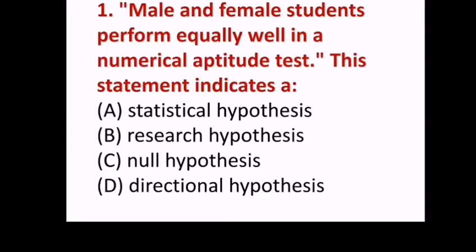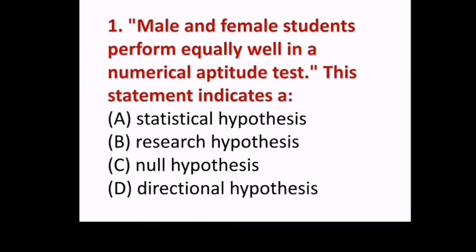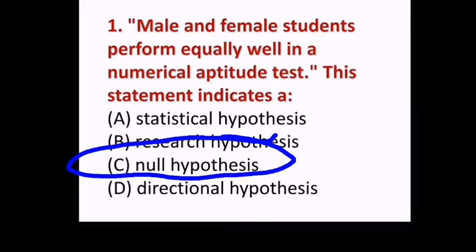First question: Male and female students perform equally well in a numerical aptitude test. This statement indicates a — (A) statistical hypothesis, (B) research hypothesis, (C) null hypothesis, (D) directional hypothesis. Answer C, null hypothesis.